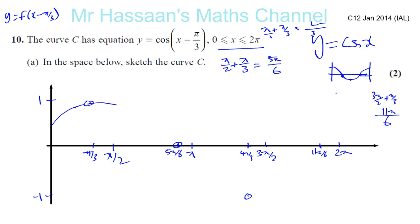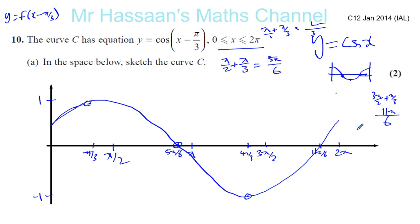Trying to draw this correctly: that's the highest point — it reaches 1 at pi over 3, then goes down, hits 0 at 5 pi over 6, continues down to minus 1, goes back up. The normal point where it reaches its highest value (1) has been shifted pi over 3 to the right; similarly every zero and minimum has been shifted pi over 3 to the right. So that's a basic sketch of y equals cosine(x minus pi over 3).